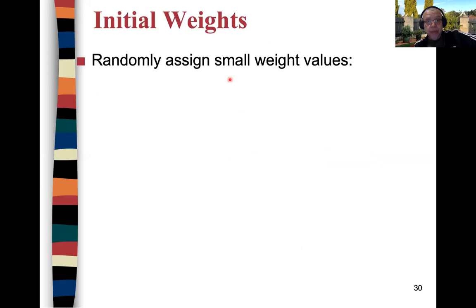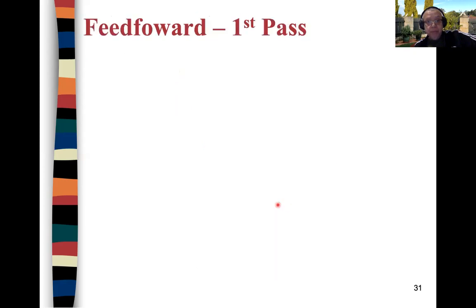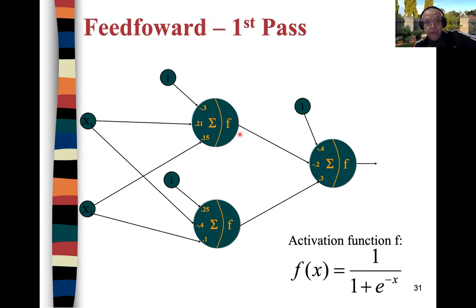Initially we randomly assign small weight values to the multi-layer perceptron. The weights are negative and positive but very small values. Using these weights and this activation function — which sums the product of the input values with the weights to get the net activation — we then apply the sigmoid as the activation function to get the output for each node.